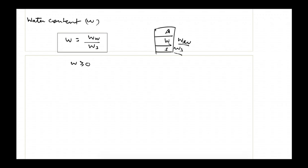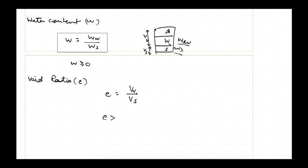The next definition is void ratio, denoted with small e. It is defined as the volume of voids divided by the volume of solids. The volume of voids can be greater or less than the volume of solids, so the void ratio can range from zero to infinity. However, it cannot be zero because there will always be some voids — it is always greater than zero. Note that we consider the soil solid mass as incompressible, so the volume of solids remains fixed.